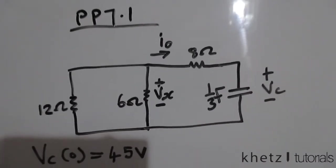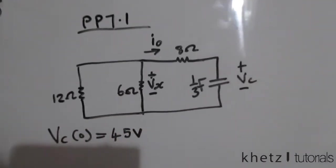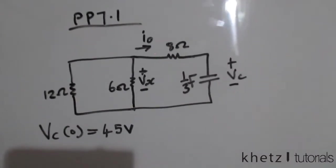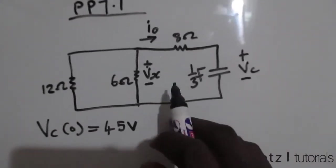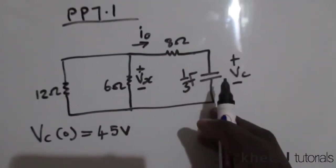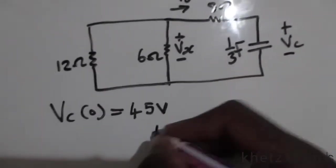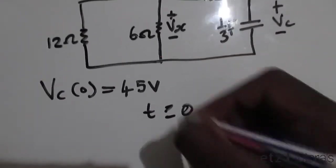Welcome to Khetz tutorials. In this video I'll be covering practice problem 7.1. In this problem we're asked to find Vx, io, and Vc for time greater than or equal to zero.